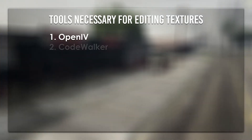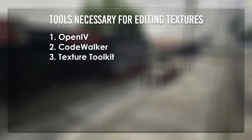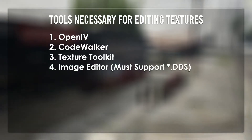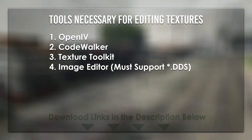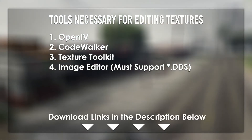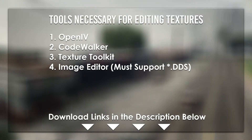You're going to need some tools downloaded before you can begin. You're going to need OpenIV, Code Walker, Texture Toolkit, and an image editor of your choice. This image editor must support the DDS file format. We'll be demonstrating how to edit textures in GIMP using a plugin linked in the description below.